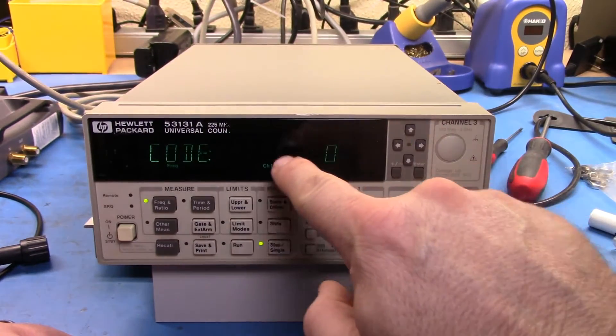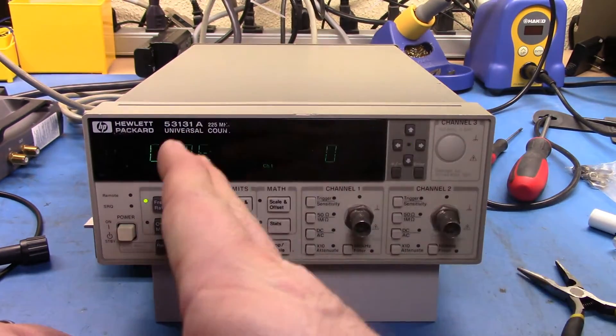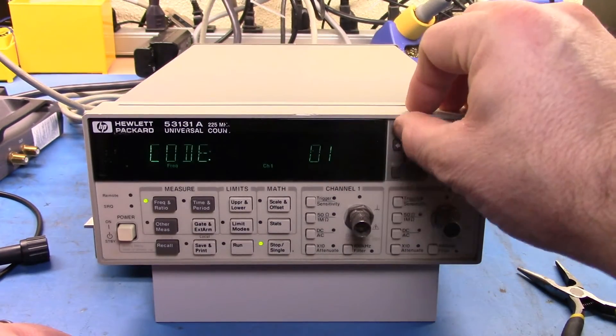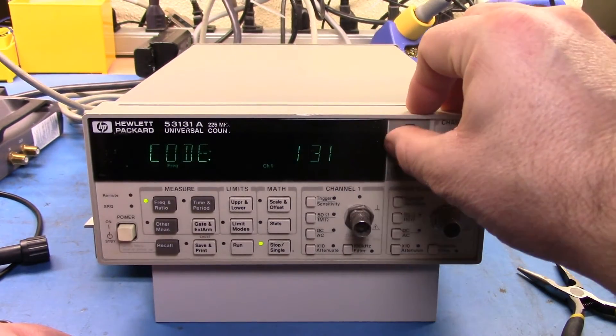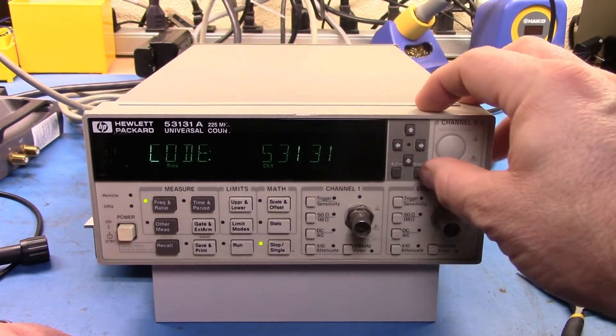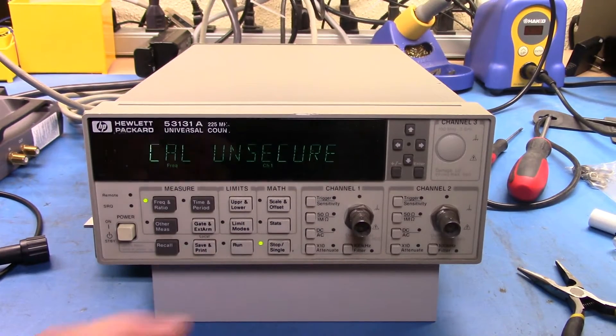And you're going to enter and sort of move the cursor position to the left as you go through. So you want 1, 3, 1, 3, 1, 2, 3, 4, 5. And there we go. And now we're in CalUnsecure.